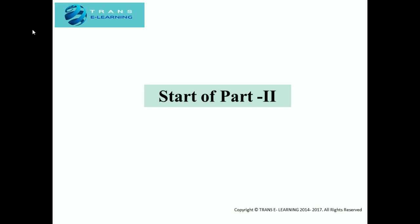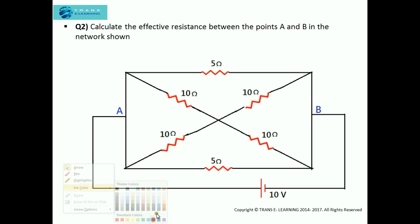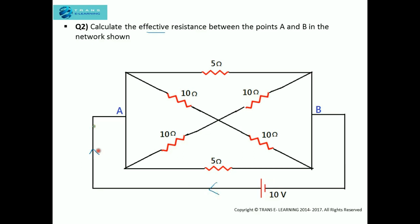Part two starts from here. Calculate the effective resistance between the points A and B in the network shown. You can see here this is the positive terminal and this is the negative terminal. Let us consider that the current I is entering the circuit through this point A.